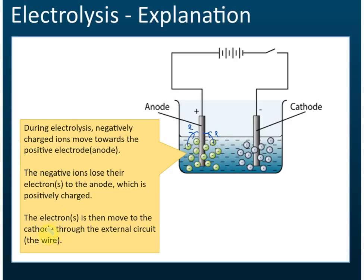The electrons are then moved to the cathode through the external circuit. After the positive terminal attracts the electrons, these electrons will be sent by the batteries to the cathodes. The batteries act as a pump that pumps all these electrons from the positive terminals to the negative terminals.